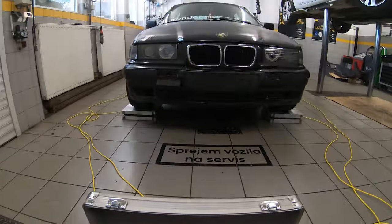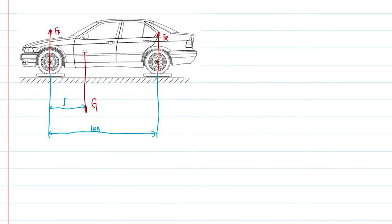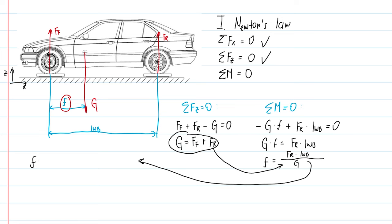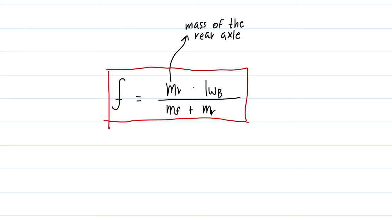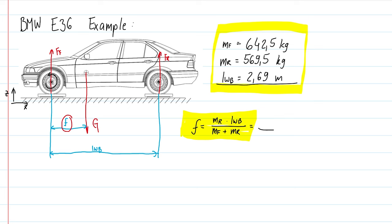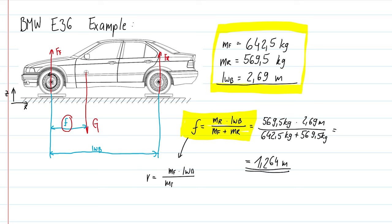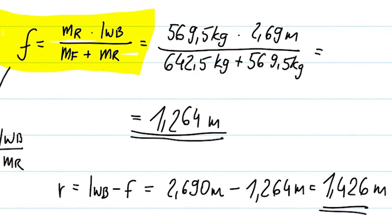When you've got your measurements it's time to do the math. After applying simple physics you end up with an equation which says that the distance between the front axle and the center of gravity equals the mass of the rear axle multiplied by the wheelbase, divided by the sum of the masses of the front and rear axle. You can also calculate the distance from the rear axle by replacing the rear axle mass in the numerator with the front axle mass. For my car, the distance from the front axle to the CG is 1.264 meters, which is closer to the front axle — consistent with the car having more weight in the front.